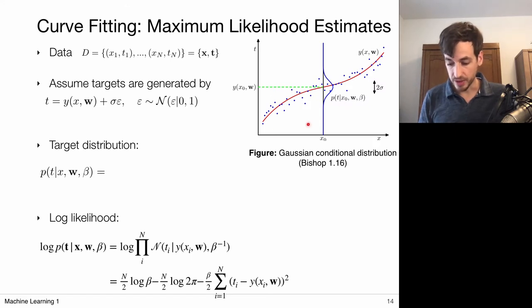So this on the right hand side is what the data looks like. We have all these input output pairs. We assume that these are generated from this true relation given by the red curve. And this is what we want to recover.